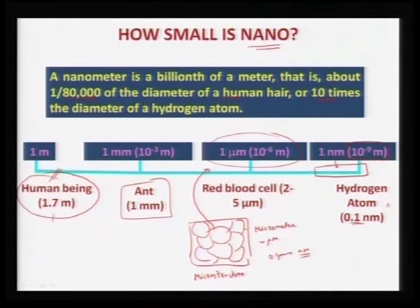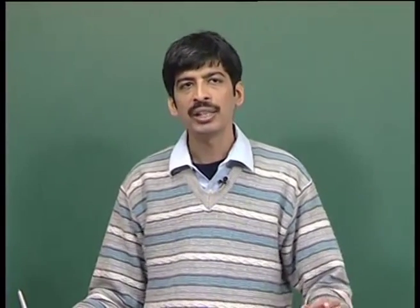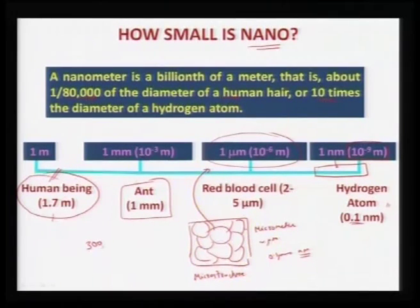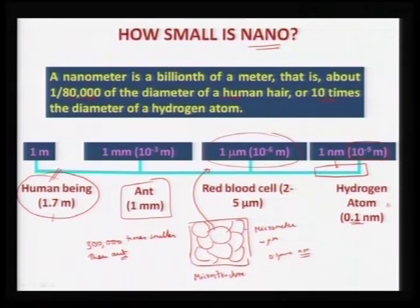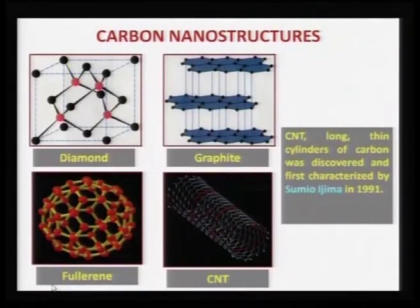To give a physical sense: if an ant — approximately 1 to 3 millimeters in length — is holding a nano gear, that nano gear would be 300,000 times smaller than the ant itself. An ant is approximately 10⁻³ meters, and we are going down to nanometers, which makes an ant approximately 10⁶ times bigger than a nanometer. That is the overall scale of the nano length.